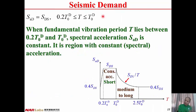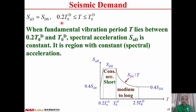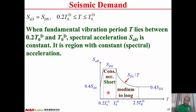For the second segment, when 0.2T0D ≤ T ≤ T0D: SAD = SDS — spectral acceleration is constant. This region is called the short-period range or the period range with constant acceleration.